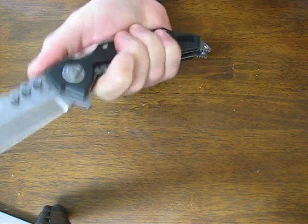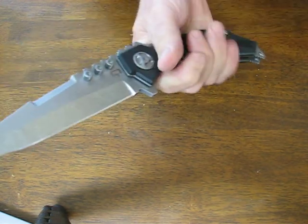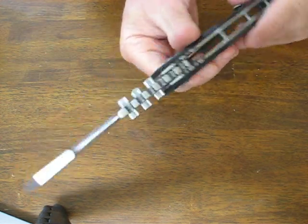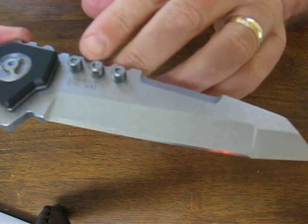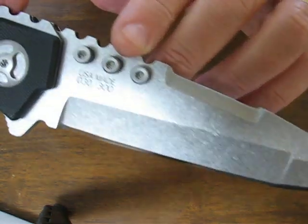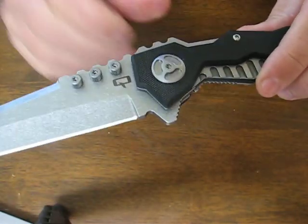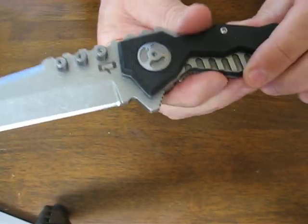The blade material is CPM 154 stainless steel. It's been hardened to 58 to 60 HRC. On this side of the knife it says USA made and it has the serial number on there. This side has Quartermaster's Q logo.